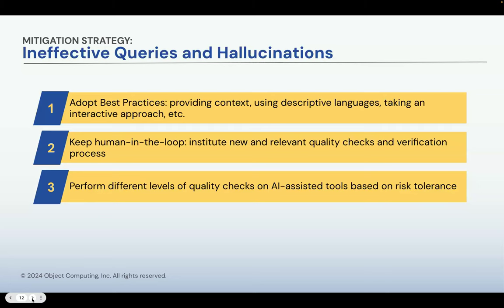These are also not new when we think about different levels of quality checks. A customer from healthcare and a customer from a gaming or entertainment industry have different views of how quality checks work in their respective business. For high-stake business, you might want a very strict level of checks, while for entertainment where your risk can be just having users frown upon imprecise answers, being aware of these levels of quality checks is going to give you the right balance of efforts and return on investment.